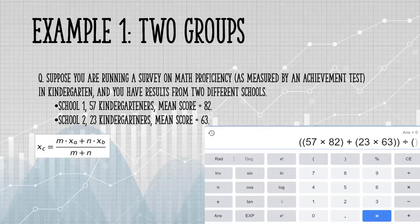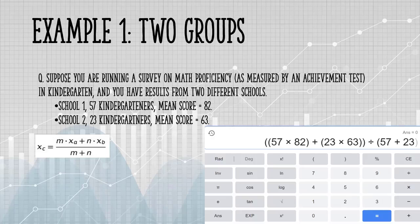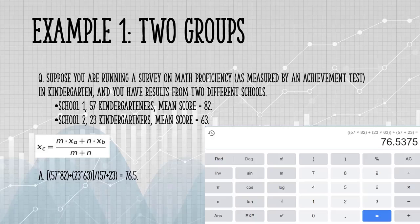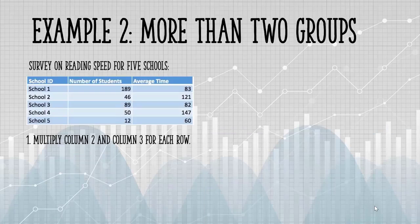And this is all going to be over M, the number of items in group 1, that's 57, and N was the number in the second group, that was 23. That gives me a combined mean of 76.5.